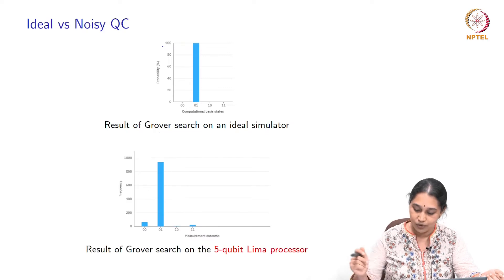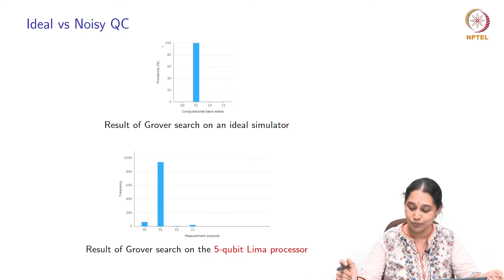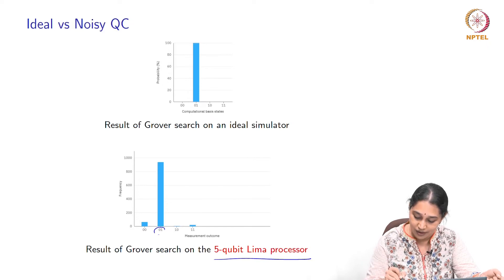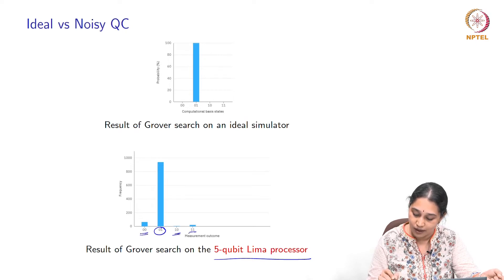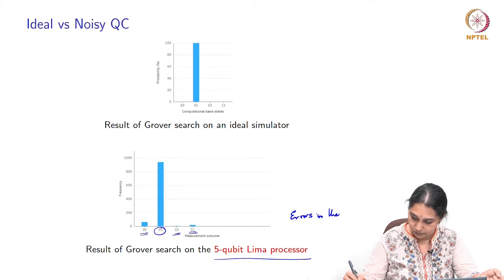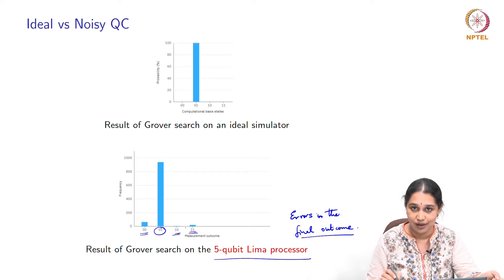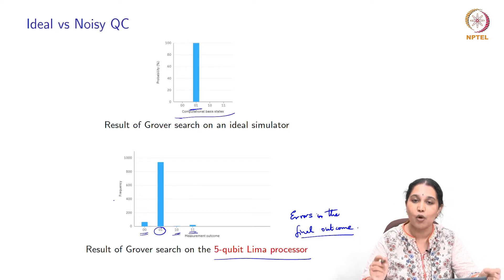But now I will show you what happens when you do an actual run on one of the IBM processors — this is the five-qubit Lima processor — and you find that you no longer get your solution state with the perfect probability 1. Rather, you now have a certain non-zero probability of getting all the other states. In other words, you now have errors in the final outcome. You have a non-zero probability of collapsing into one of the other states, which is a non-solution state, since the ideal simulator tells you that 0,1 is the solution state. So this is an example of what noise can do.